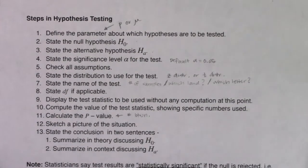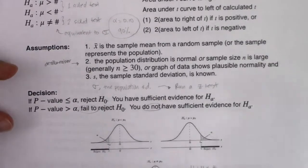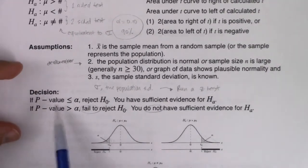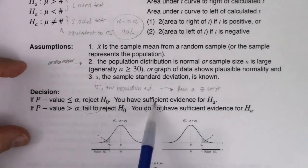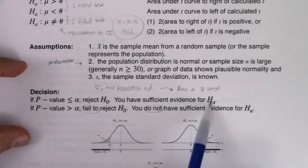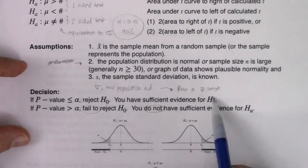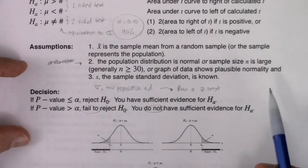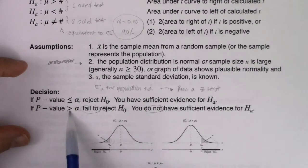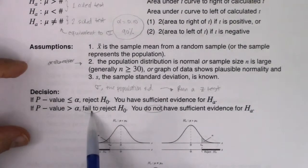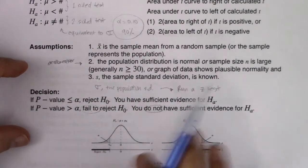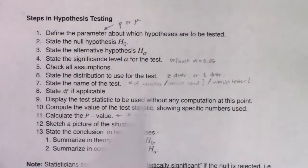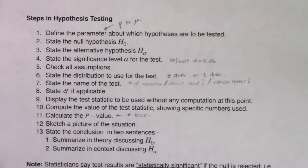These write-ups are pretty similar. If your p-value is less than alpha, reject H-naught and say you have sufficient evidence for the alternate — using context, not just the word 'alternate.' If it's greater than alpha, tack on 'fail to' in the first sentence and 'do not' in the second. So those write-ups are going to be pretty similar regardless of which direction you go.